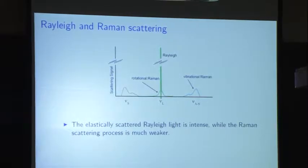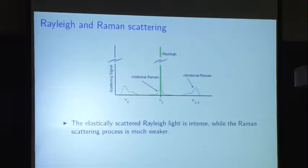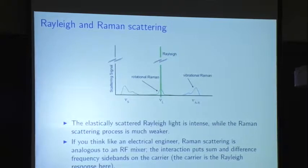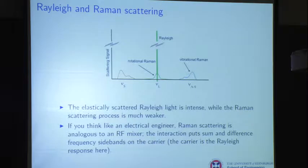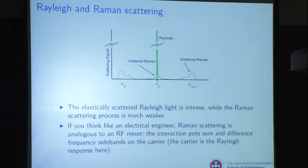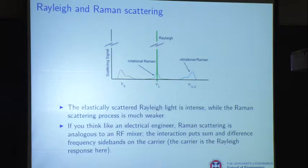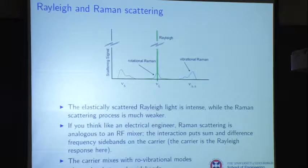We get elastically scattered Rayleigh light very intensely at the laser frequency - that's what this spike is supposed to show - and then Raman scattering at much weaker levels. As I said before, we've already talked about mixing when we were talking about lock-in amplifiers and also mode locking. In this case you have this dipole that's in action and it's going to mix with the carrier - the carrier is Rayleigh. The carrier has an electric field, and we're talking about a dipole interaction. So it's like an RF mixer: we put sidebands on the carrier and we get those Raman curves.